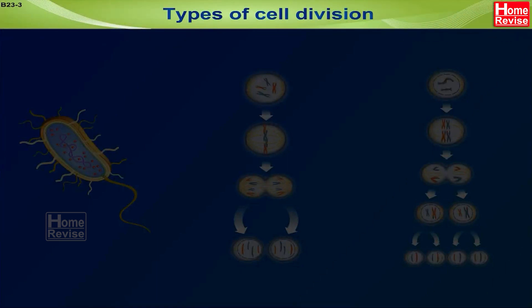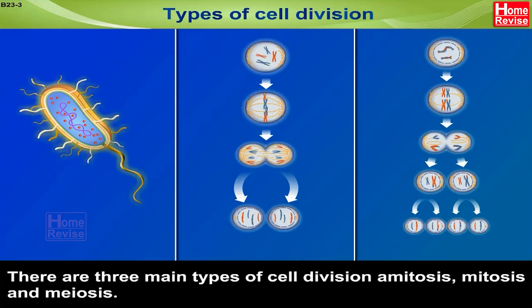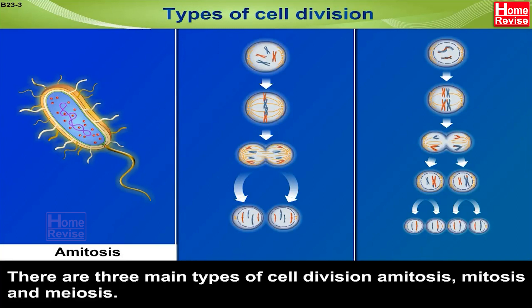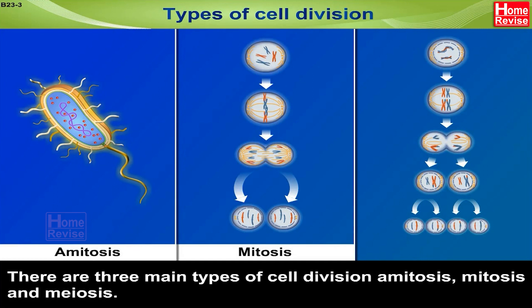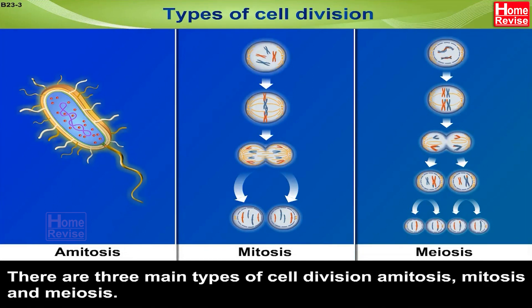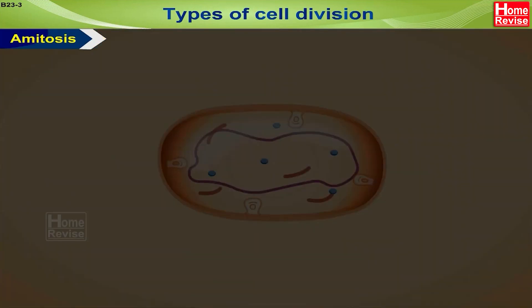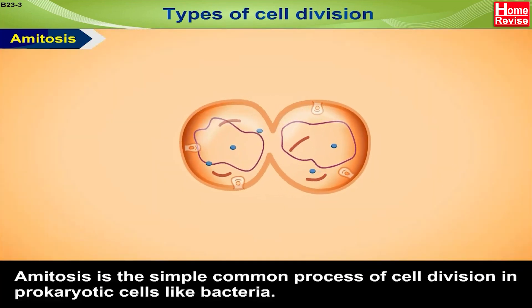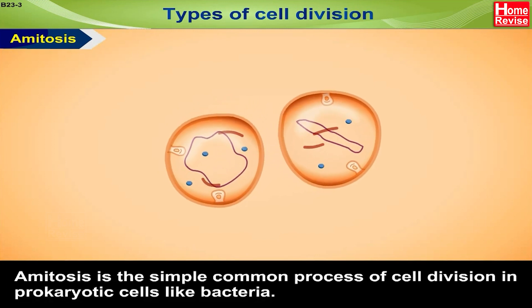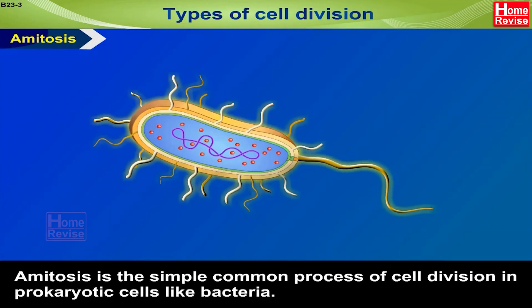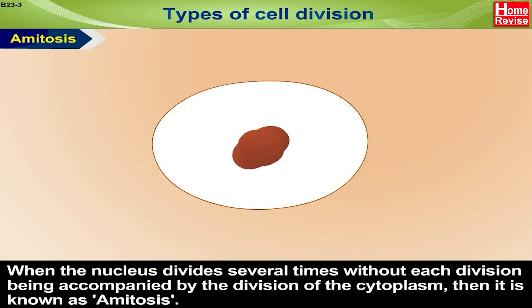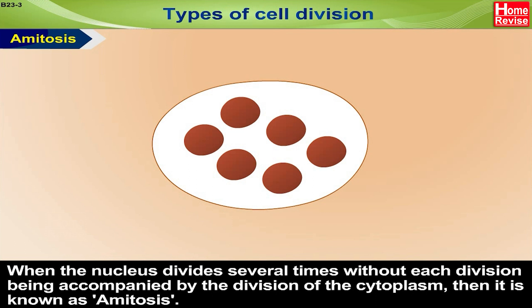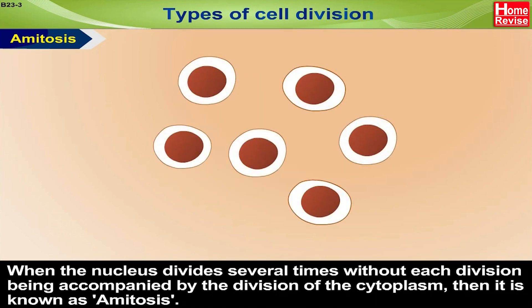Types of Cell Division. There are three main types of cell division: Amitosis, Mitosis, and Meiosis. Let us first study amitosis. Amitosis is the simple common process of cell division in prokaryotic cells like bacteria. When the nucleus divides several times without each division being accompanied by the division of the cytoplasm, it is known as amitosis.